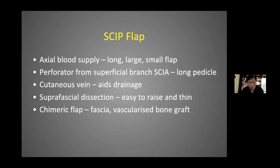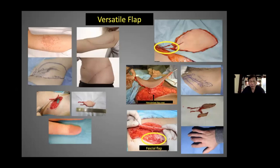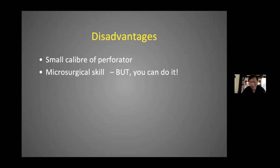The SCIP flap is great because it has an axial blood supply, so you can raise large or small flaps based on a perforator of the SCIA. Quite often when you see a big cutaneous vein you can use that to ease drainage so you don't have to use the venae comitantes. You can do suprafascial dissection, everything's easy to raise, and it's very thin — you can thin it radically. You can also have chimeric flap composition. It's a very versatile flap. The only disadvantage is the small caliber of the perforator, which requires microsurgical skills.